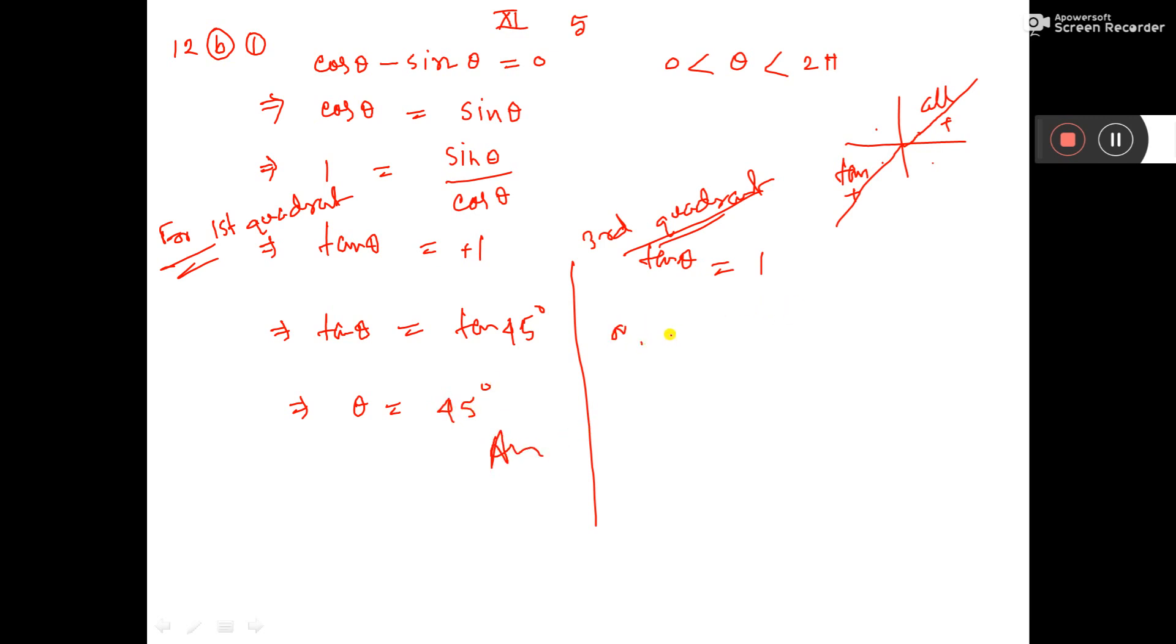But for third quadrant, tan theta is equal to tan 2 into 90 degree plus 45 degree. Why 45 degree? Because tan 45 is 1. Why 2 into 90? Because you are going to the third quadrant. This is 1 into 90. Then this is 2 into 90 plus 45, up to this place.